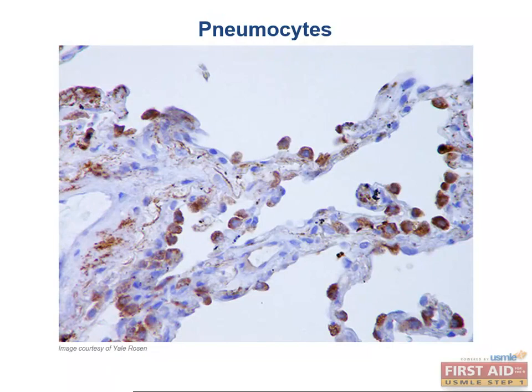Pneumocytes are high yield for the boards because they are so important in gas exchange and respiratory physiology. First, let's talk about type 1 pneumocytes. Type 1 pneumocytes make up most of the alveolar surface. These squamous cells are thin and flat, which makes them great for gas exchange at the alveolar-capillary interface.